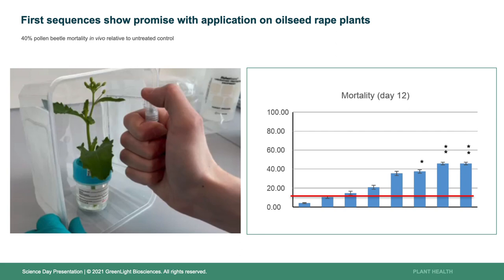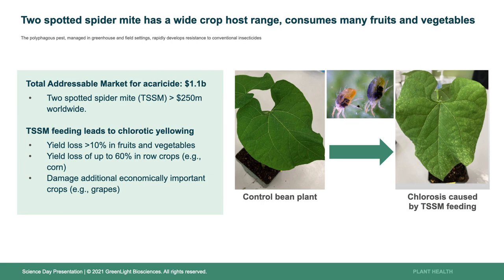Building on the success with the varroa project, we're also looking at two-spotted spider mite, a polyphagous pest in greenhouse and field settings. It has rapidly developed resistance to current insecticides, and since varroa mite is also an acaricide or arachnid, we've already demonstrated control with double-stranded RNA and are now transferring this to two-spotted spider mite. Two-spotted spider mite is a pest of row crops as well as fruits and vegetables. 60% of yield loss can be attributed to two-spotted spider mite in the western Great Plains of the U.S., especially on dryland corn conditions, and it also damages economically important crops such as grapes and other fruits and vegetables.